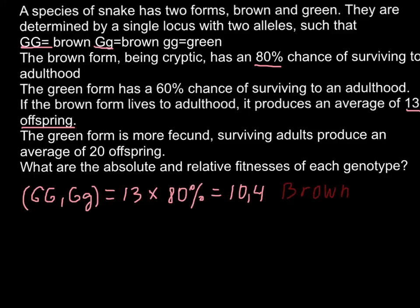And for the genotype that is green, that is homozygous recessive, the number of offspring is 20, but the survival rate is only 60%.